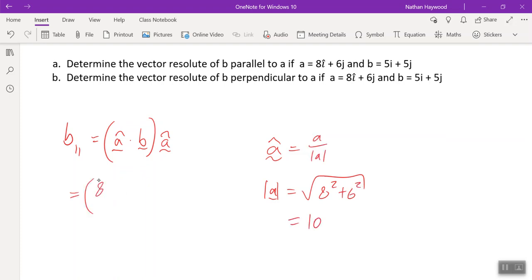What was it? 4 over 5i plus 3 over 5j dot B is 5i plus 5j. And then we're multiplying that by that one. So what's the answer? 7.